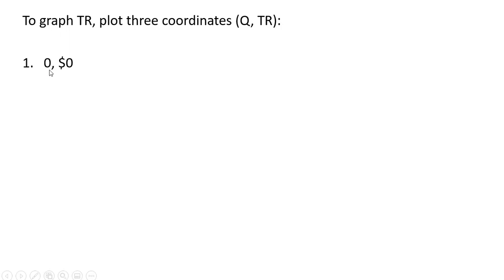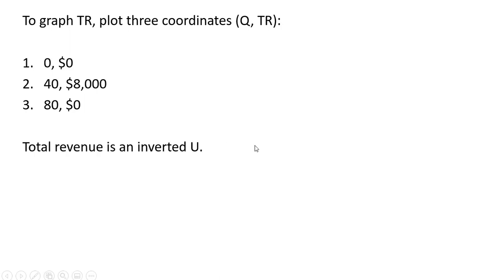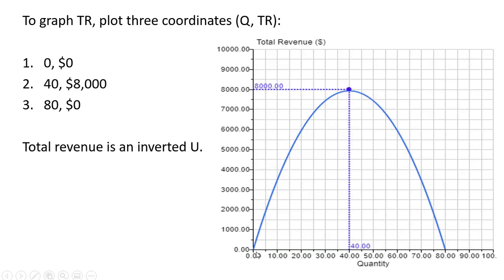To graph total revenue, we're going to plot three coordinates. The first coordinate: total revenue is zero when Q equals zero. We found that total revenue is maximized at 40 units — at Q equals 40, total revenue is $8,000. And then at Q equals 80, total revenue is zero. Graphing these three coordinates, we notice that total revenue will be an inverted U shape. Our first coordinate has Q equals zero, total revenue equals zero; over here Q equals 80, total revenue is zero; and at the peak, Q equals 40, total revenue is $8,000.